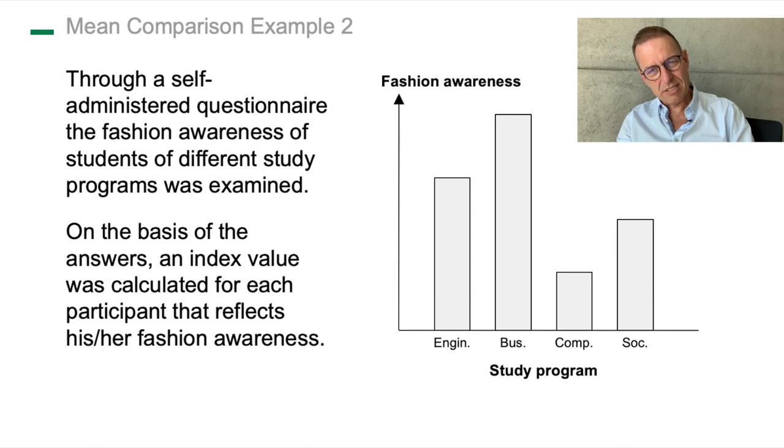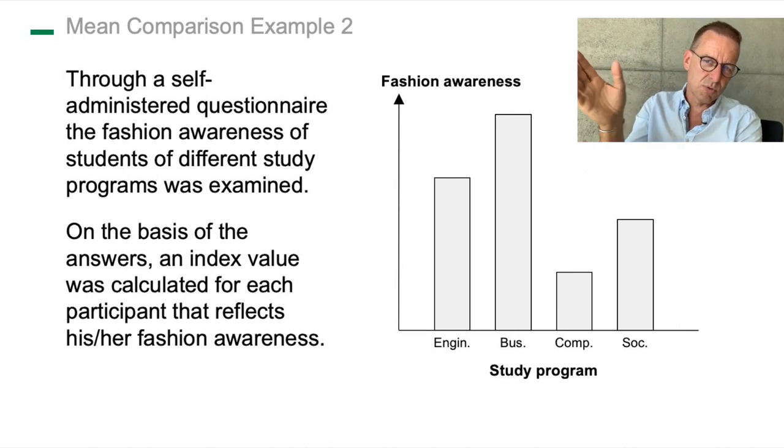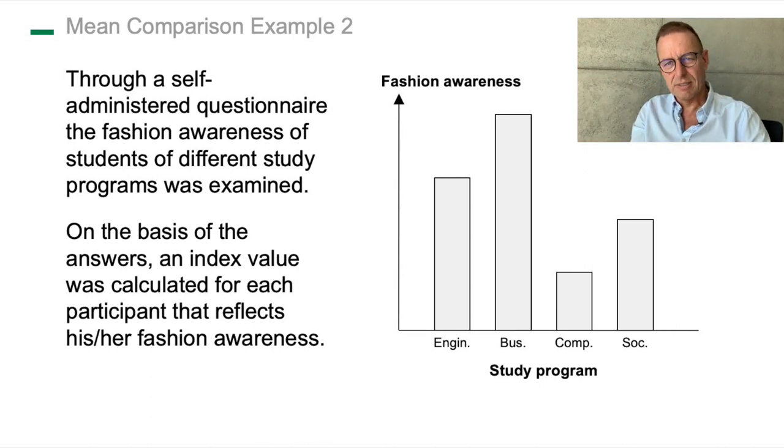When the independent variable is nominal, you do not draw a line. In this case, with fashion awareness, you could also change the order of the different study programs. It would be absolutely okay. But with the alcohol consumption, there was really an order from no alcohol up to much alcohol. It's not nominal scale. It was at least ordinal scale. I would say rather interval scale, because the amount of alcohol that was consumed was absolutely constant between every interval.